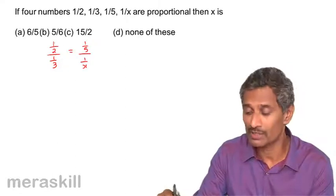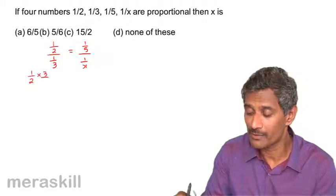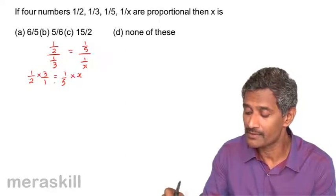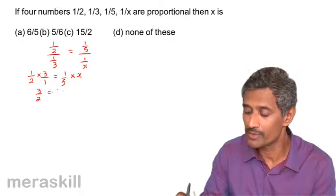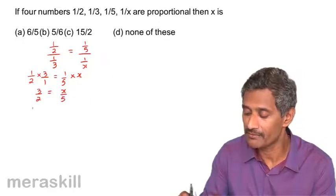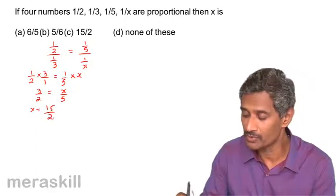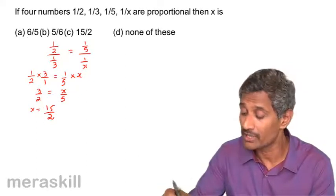Now, this if you invert it, half into 3 by 1 is equal to 1 by 5 into X. So, we have 3 upon 2 is equal to X by 5 and X is 5 into 3, 15 upon 2, that is 7.5 and let's check where we have the options.